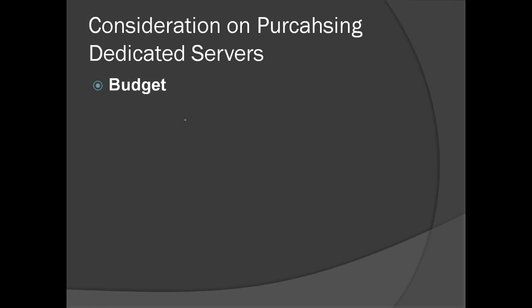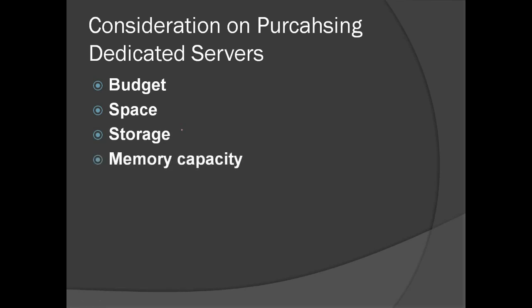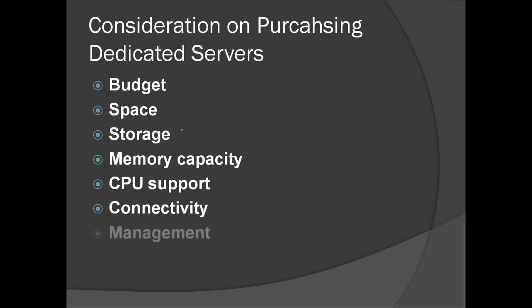Considerations when purchasing dedicated servers: budget — very high processing power requires a larger budget; space — whether to use a tower-type or rack-mounted server; storage capacity; memory capacity; CPU or processing power; connectivity — 100 Mbps, 1 Gbps, or 10 Gbps; and management — do you need to manage the server.